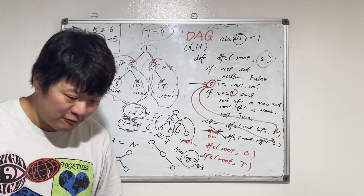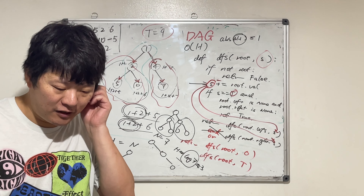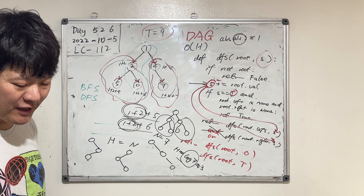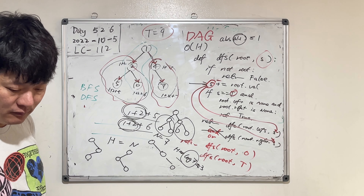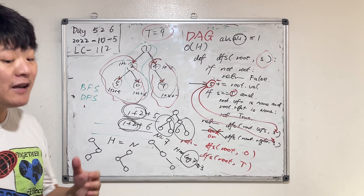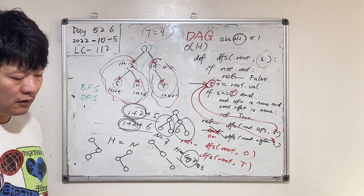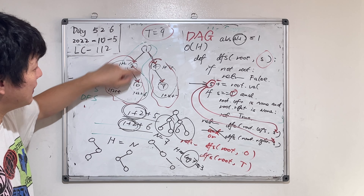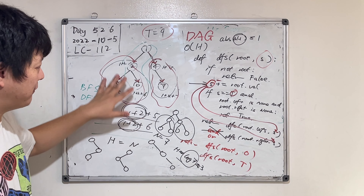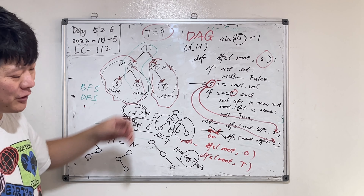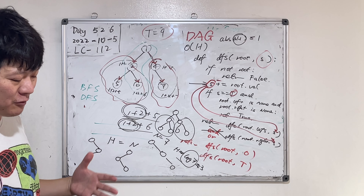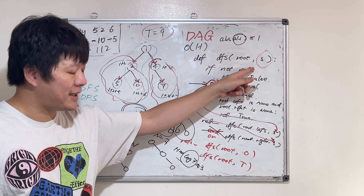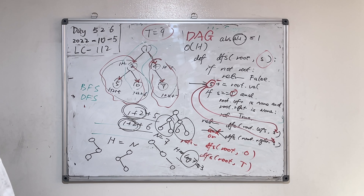So what have you learned today? We have a binary tree and we need to find a target T. We want to find out if there's a path from root to the leaf nodes where the sum of the nodes visited equals the target. There are two ways of solving it using depth-first search: pass down the accumulated sum, or pass down the remaining sum by subtracting. Next session we'll talk about breadth-first search. Bye bye!